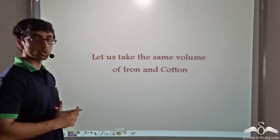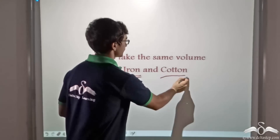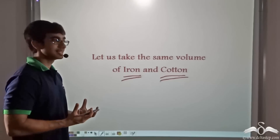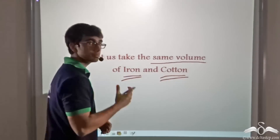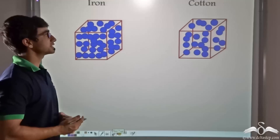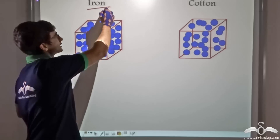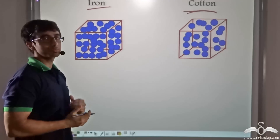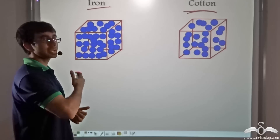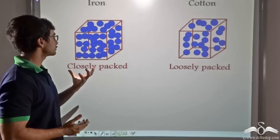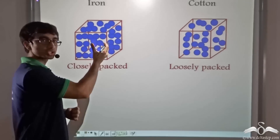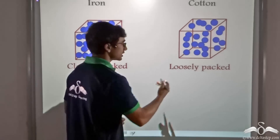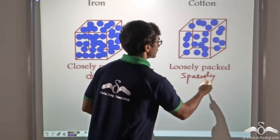Now we consider the same volume taken for both the iron weight as well as cotton. In other words, we are considering iron weight and cotton that occupy the same amount of space — that is, equal or same volume. These schematics represent the same volume taken for iron as well as cotton. Let us consider that a unit volume of one meter cube has been taken for both iron as well as cotton. As you can see, in the case of iron the molecules are very closely or densely packed, and in the case of cotton the molecules are loosely or sparsely packed.